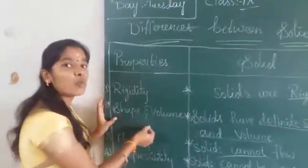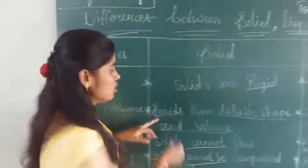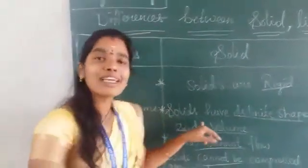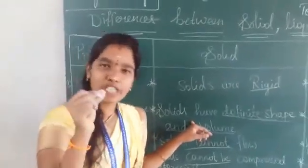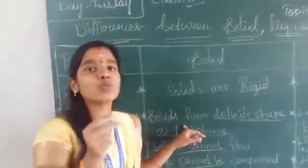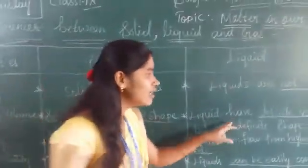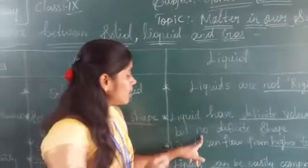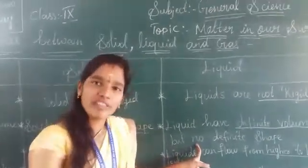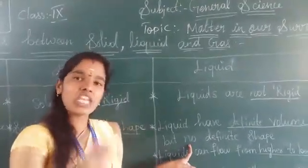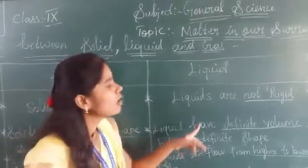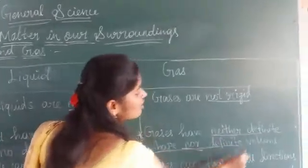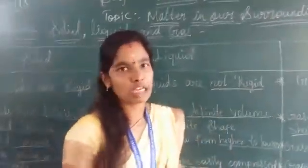The second property is shape and volume. Solids have definite shape and definite volume. In the case of liquids, they have definite volume but they don't have definite shape — they take the shape of the container. Gases have neither definite shape nor definite volume.